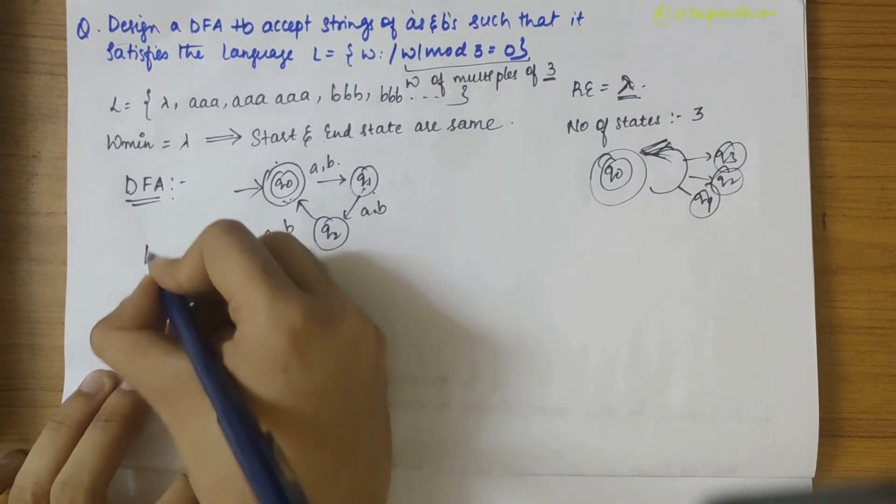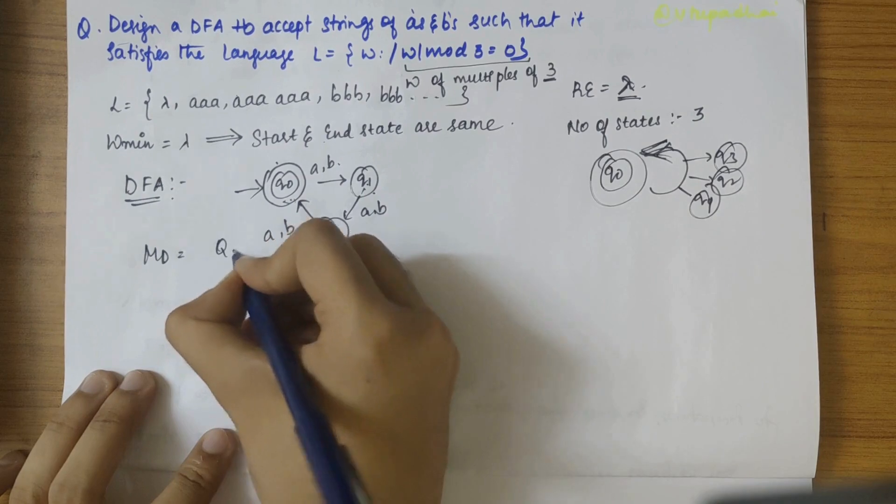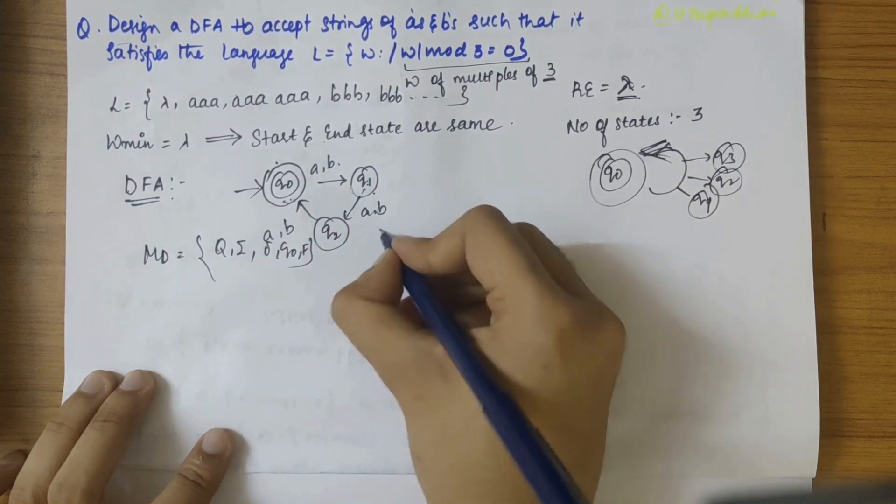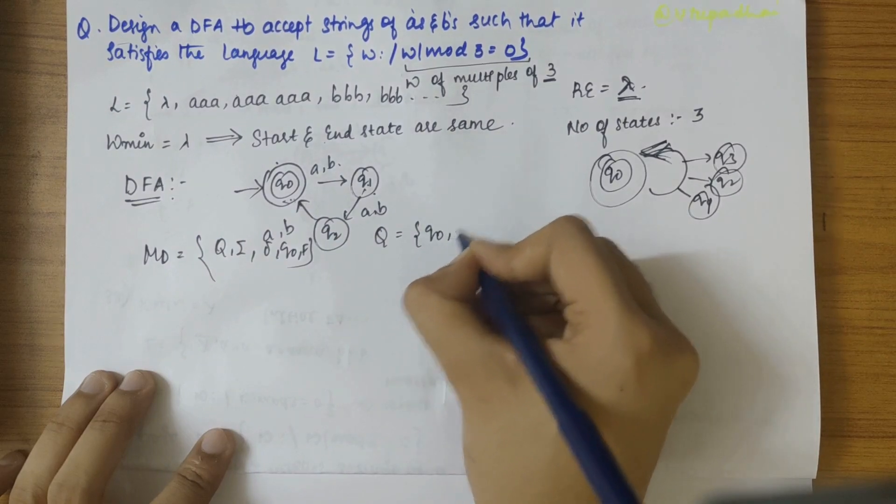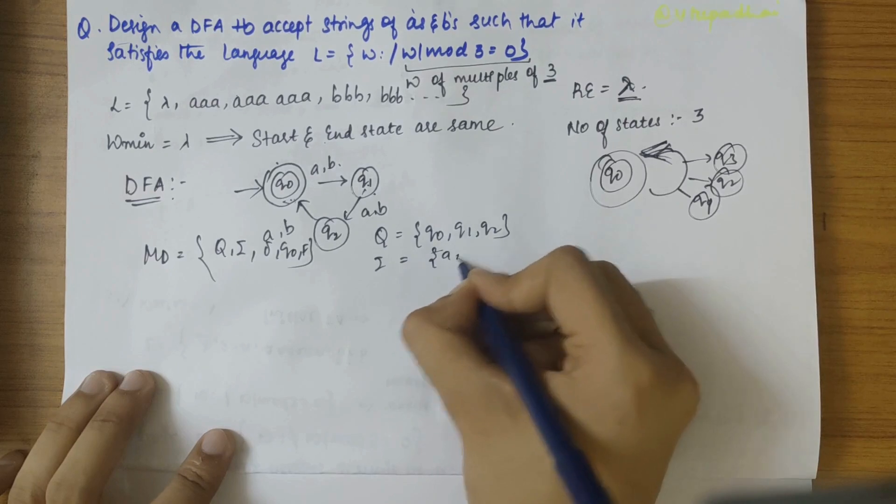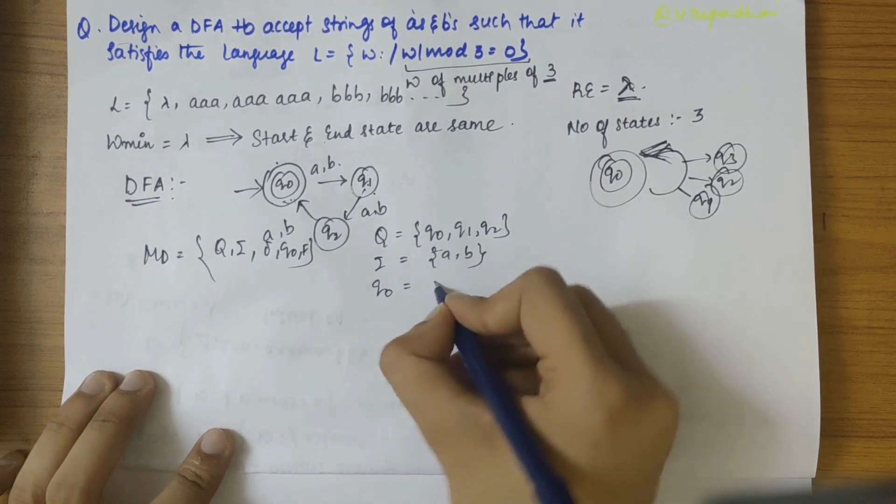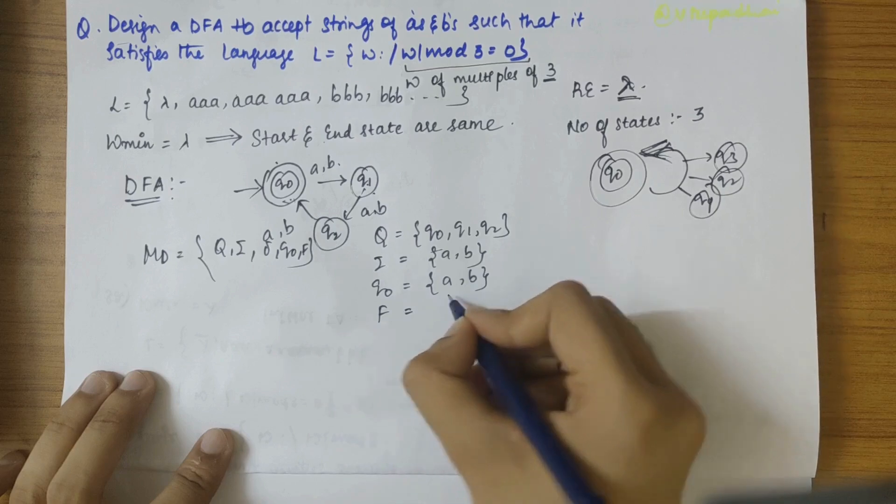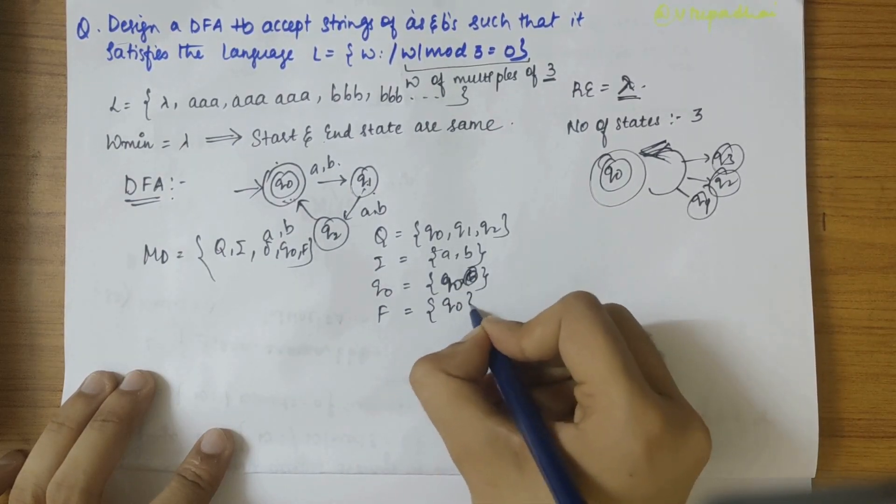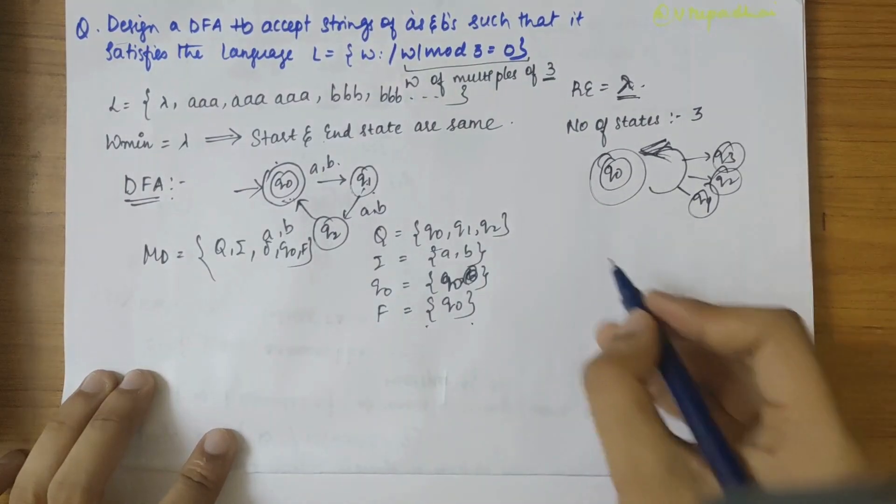So this is the DFA. Now defining M equals Q, sigma, Q0, F. So Q values, we can write it as Q0, Q1, Q2, and sigma comprises of A and B. Q0 being the initial state, and F being the final or accepting state again to be Q0 itself.